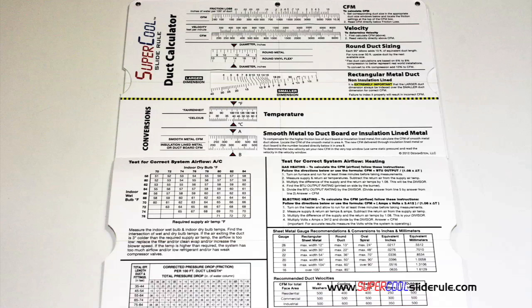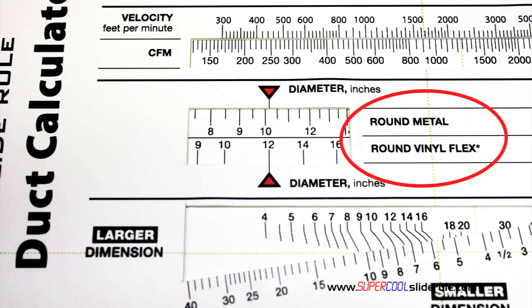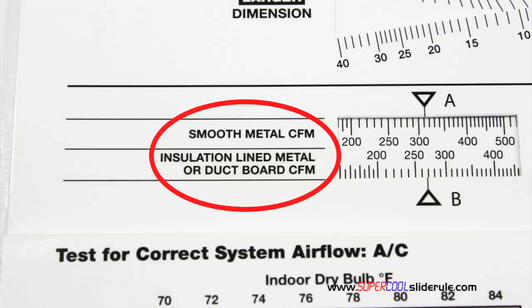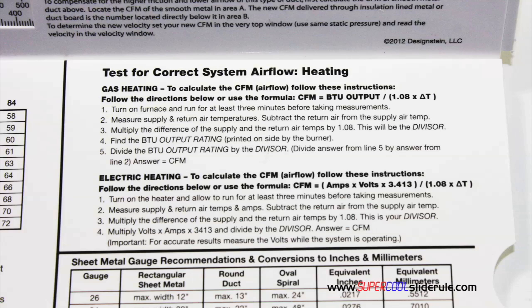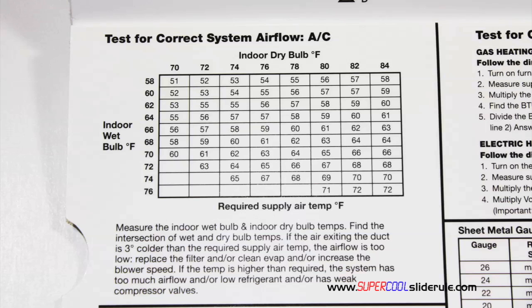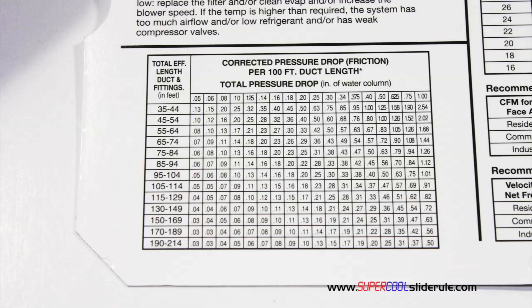Inside is packed with even more information. It performs sizing of both metal and flexible duct. It has the only direct reading conversion from smooth metal to insulation-lined metal we've ever seen. Most technicians have never been taught that if insulation is on the inside of the ductwork, you cannot size it with a regular duct calculator. It has step-by-step directions for determining airflow through a gas furnace, electric furnace, or an air conditioning unit, plus pressure drop multipliers for ductwork and recommended velocities.